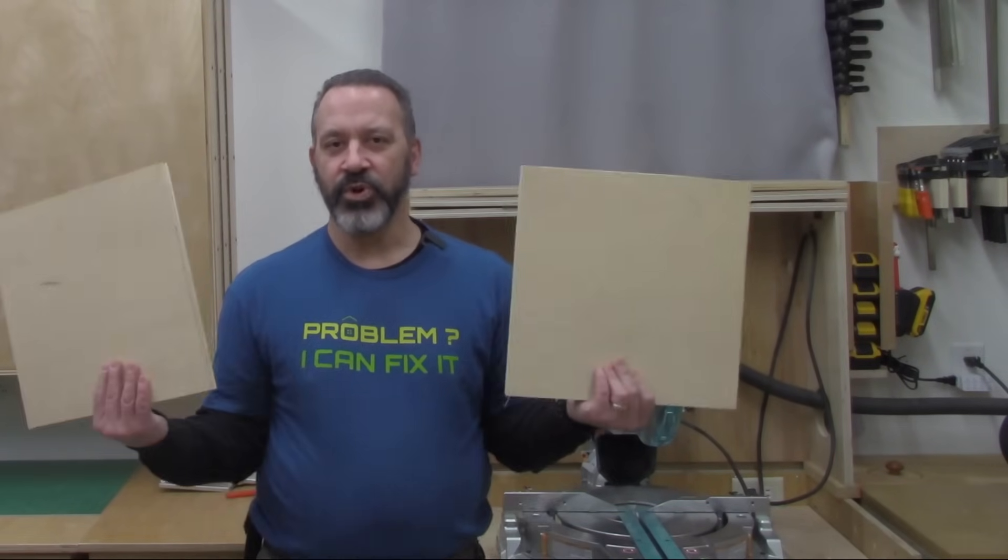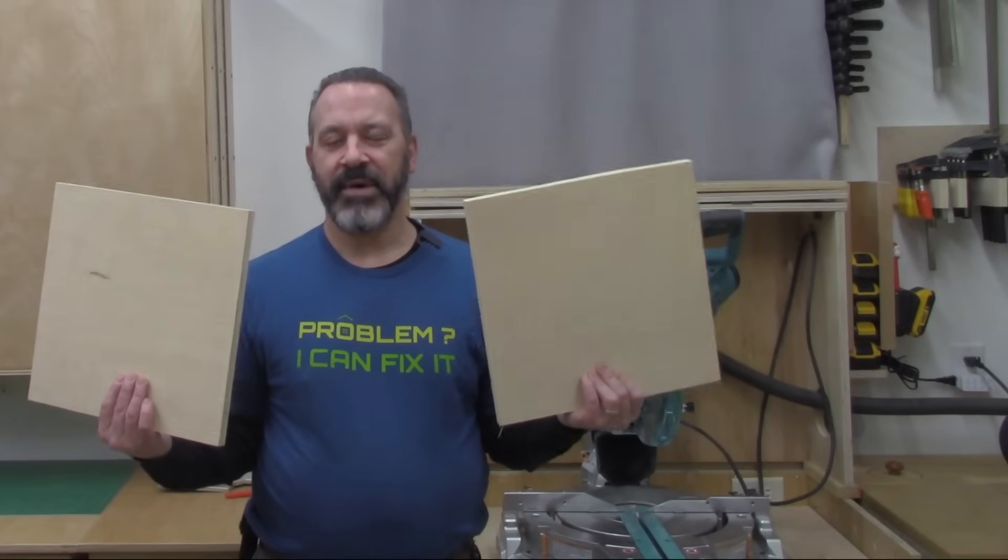Now that we've made sure our fence is straight, we can go ahead and set our saw up to make sure our 90 degree cuts are truly 90. For that, you need to know what your saw's maximum cutting capacity is. And you're going to need two pieces of wood that are about the size of that maximum cutting capacity.